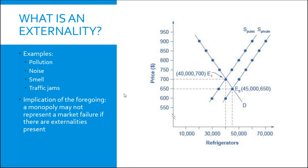An externality is when the public costs or benefits of a good separate from the private, and you can see that here on the graph to the right. Firms and individuals really only care about their private costs. So when private and public costs are aligned, as they were in the perfectly competitive market, that's really not a problem. But when they separate, then we have an externality.